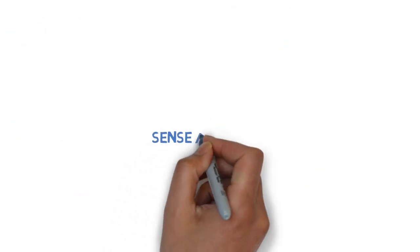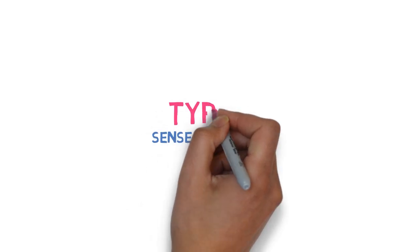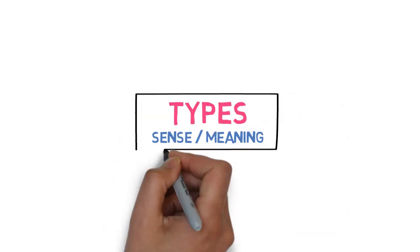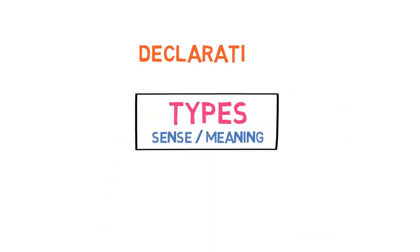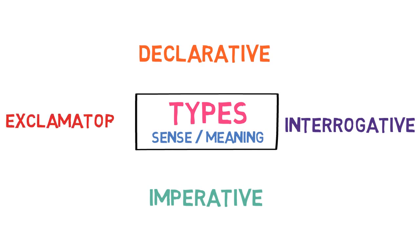Based on the sense or meaning of the sentence, they are divided into four types. Let's look into each of them with examples.